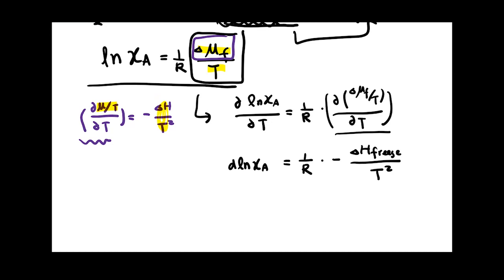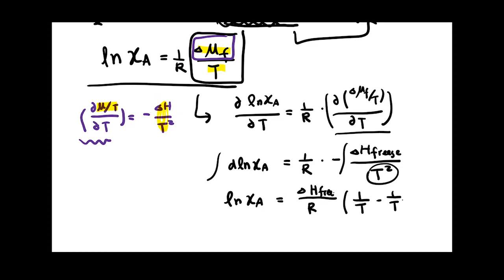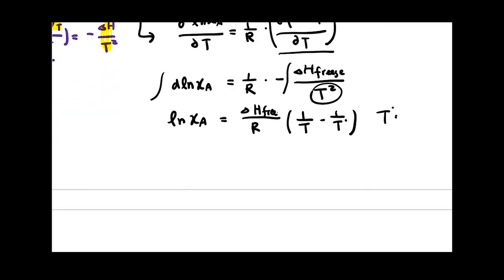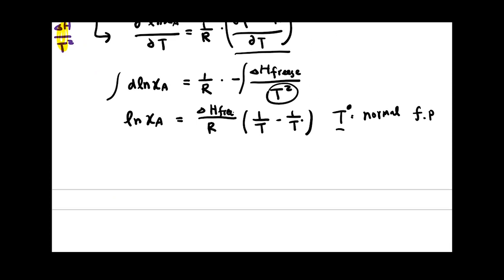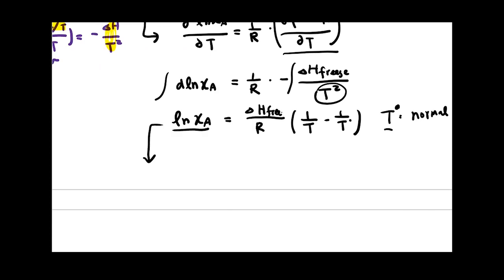The next step is to integrate over T. On the left-hand side we get ln(xA). On the right-hand side we get delta H_freezing over R times (1/T minus 1/T°), where T° is your normal freezing point — for water that's 0°C. We can write ln(xA) as ln(1 − xB), and mathematically ln(1 − x) ≈ −x, so ln(1 − xB) equals −xB.